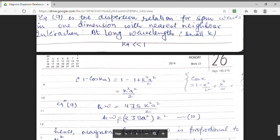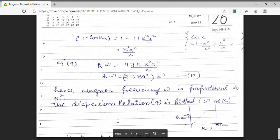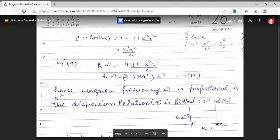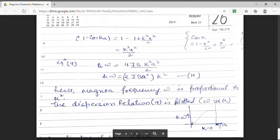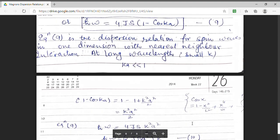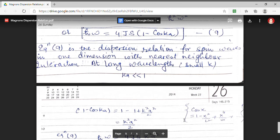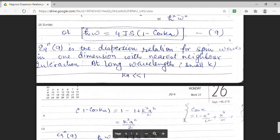I get my relation h cross omega to be 2js a square k square. That means, magnon frequency is proportional to k square. The dispersion relation, the plot between omega versus k is shown in this graph. So, this is my dispersion relation for magnon's h cross omega to be equal to 4js 1 minus cos ka.